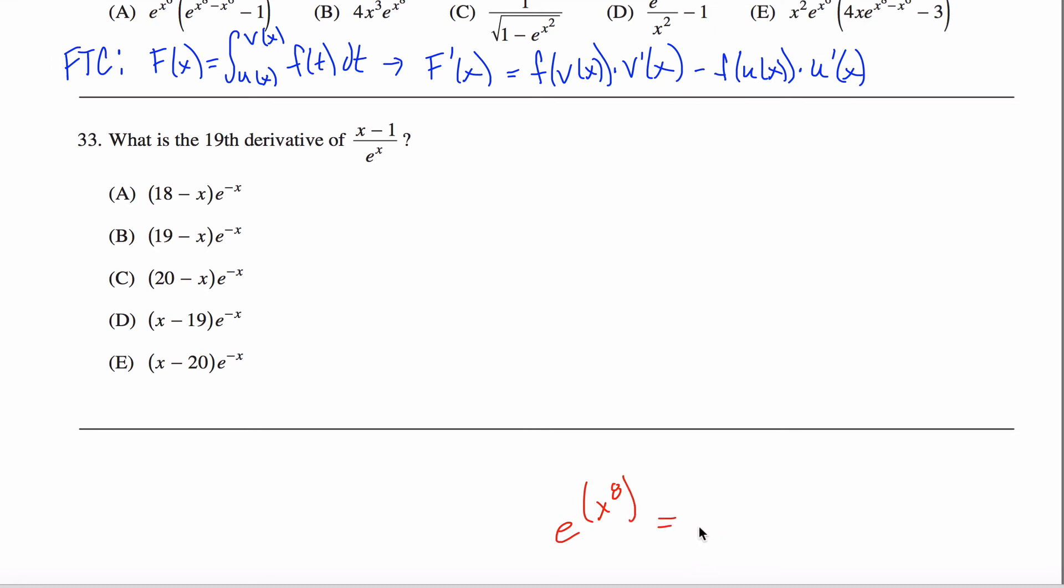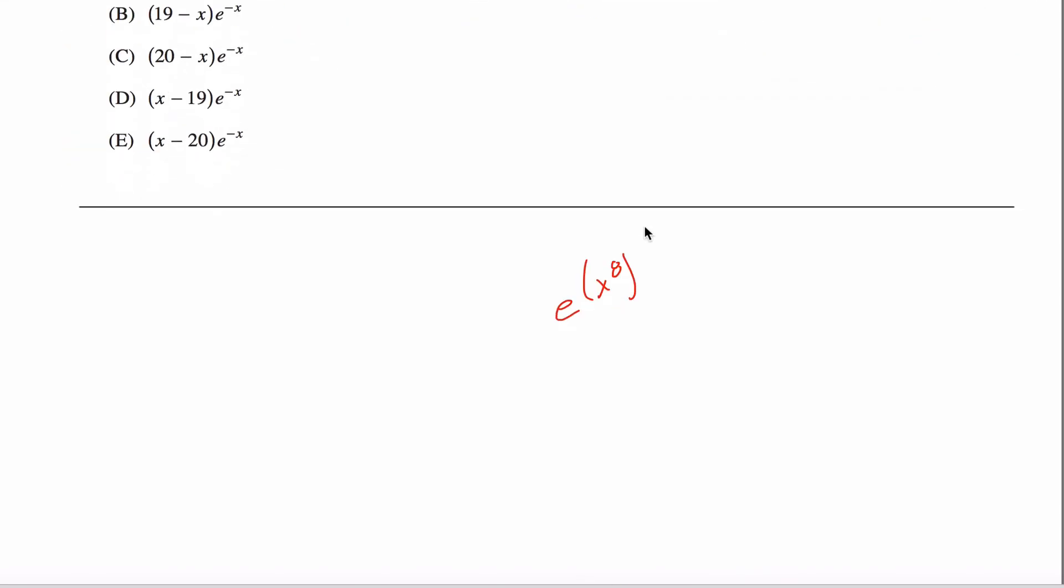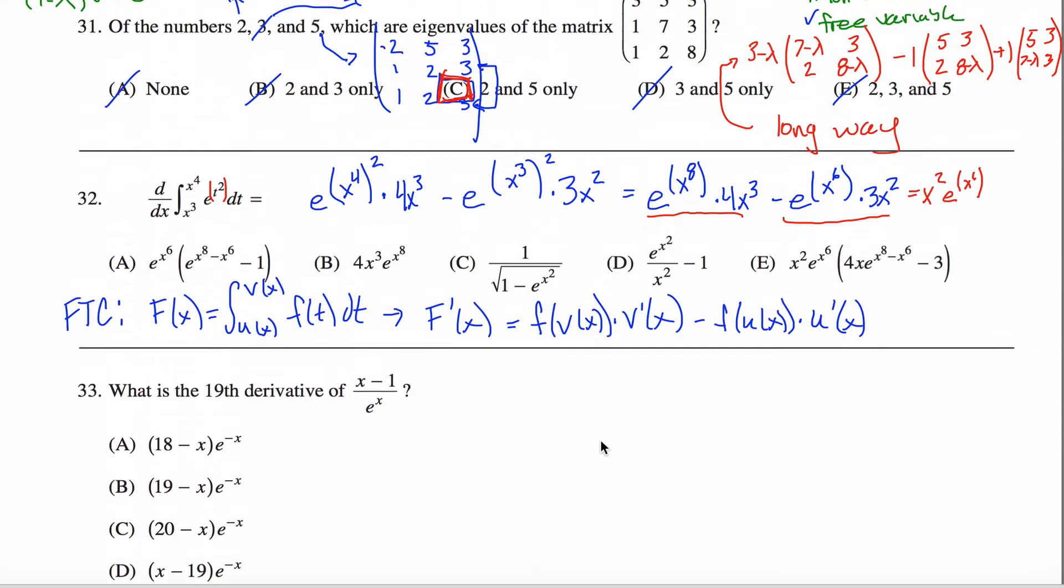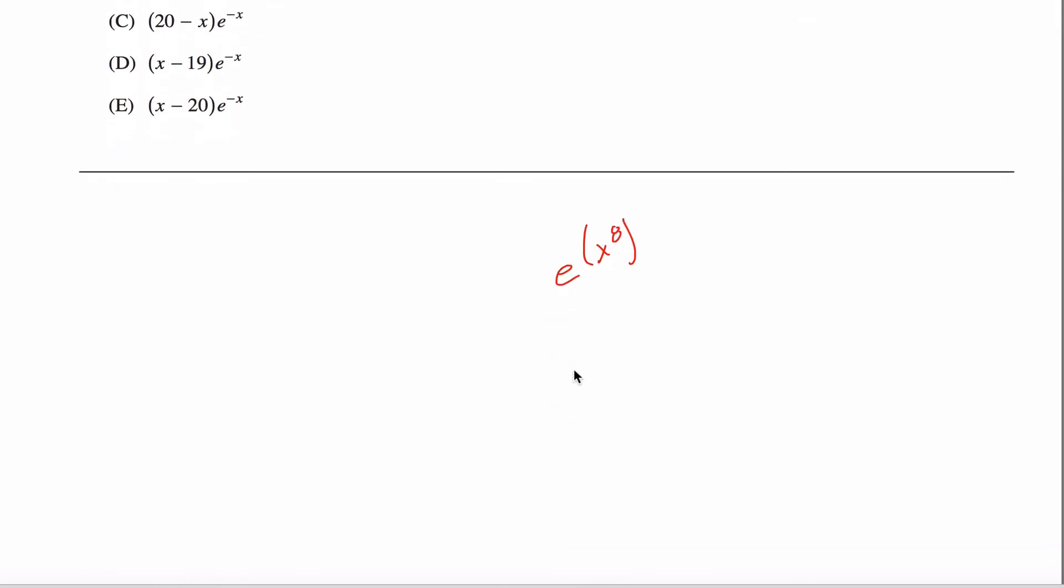And I claim that that is the same as, let's do it this way. If I'm going to factor out E to the X to the 6th, which I think I want to do because I'm staring down at the solution, it looks like this one has that factored out. If I factored out, really what I'm doing is I'm dividing here. Hey, wait a minute.